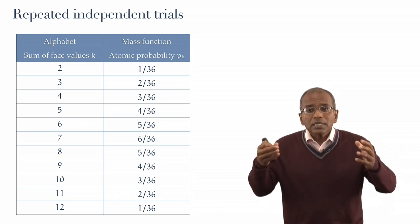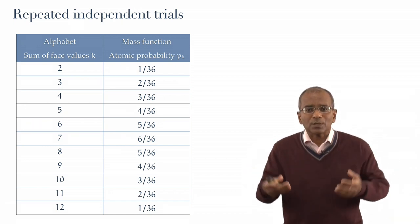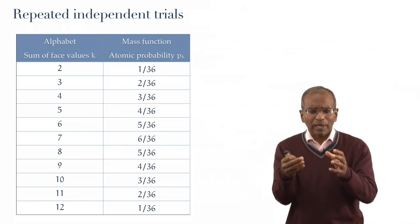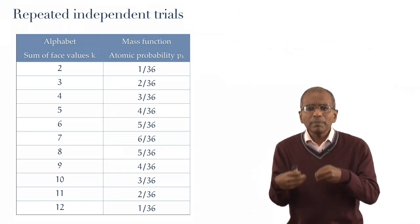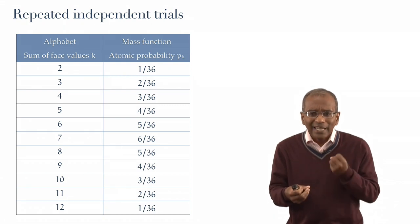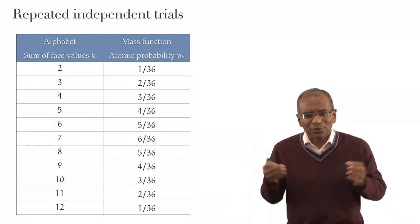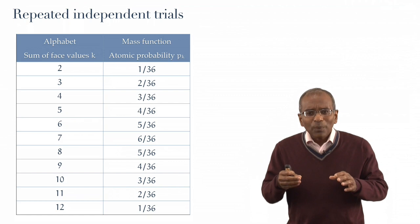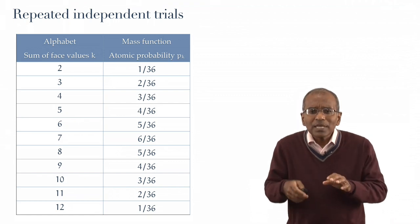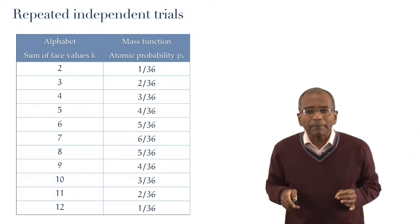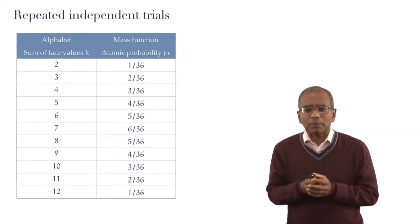Now, what is the sample space for this conjoint experiment? And, clearly, here we have a setting where we have repeated independent trials. Each throw is independent of the previous throw, with a termination condition. These are the peculiar rules of the game. So, let's start with the sample space.